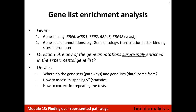We discussed that scenario quite a bit in the previous lecture. We have a gene list, we have some gene sets or annotations from gene ontology, and we ask: are any of these gene annotations surprisingly enriched in the experimental gene list? The details are: where do the gene lists and gene sets come from, how do we assess 'surprisingly,' and how to correctly repeat these tests and not become overly enthusiastic about the data.